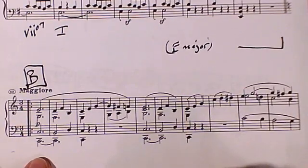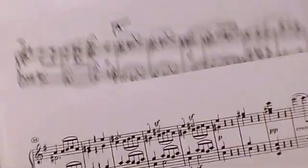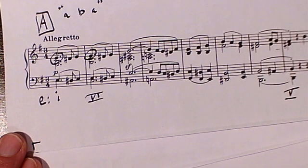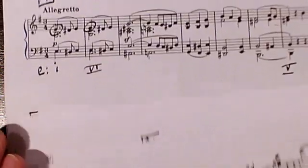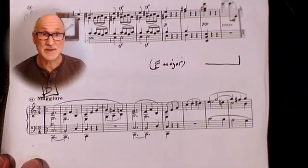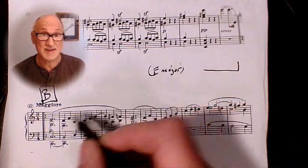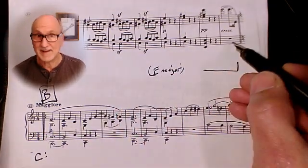This middle section begins at measure 63 in the key of C major. Do you remember that harmonic motion of the first two measures of the piece? Well, here it's playing out on a much larger scale, as the key relationship between the two main sections of the piece. We may be tempted to call this a phrase modulation again, as we did in measure 17, but there's much more to it than that in this location.